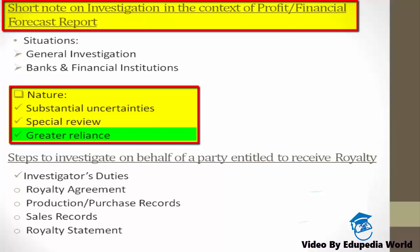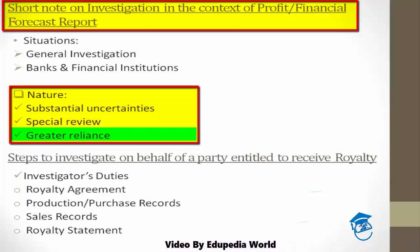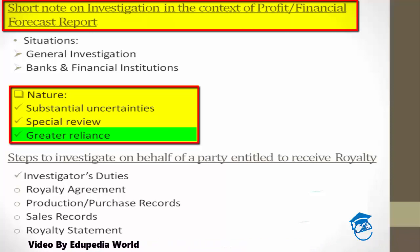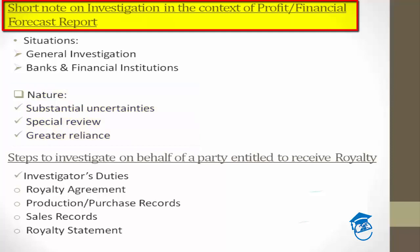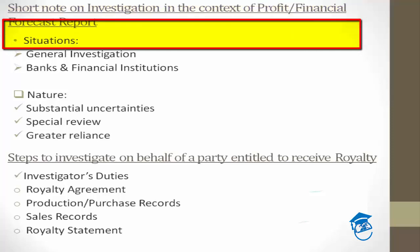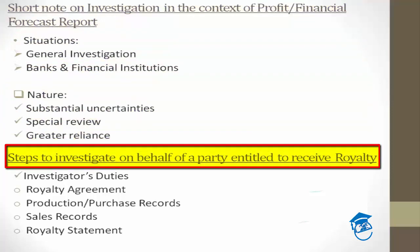That was the short note on investigation in the context of profit and financial forecast reports — covering key situations where it is required and the nature of the exercise. Now let's move to the next part: steps to investigate on behalf of the party entitled to receive royalty.